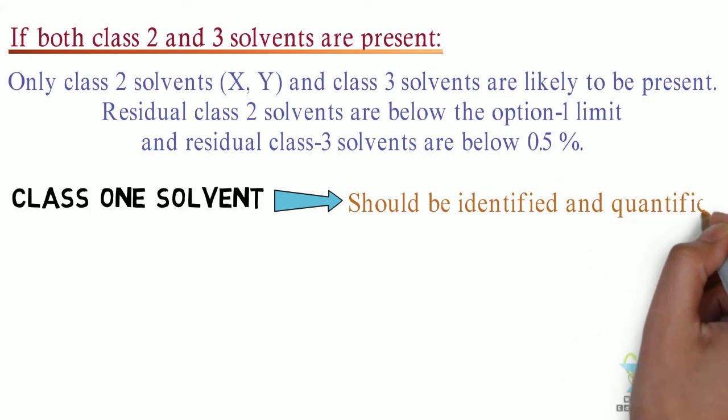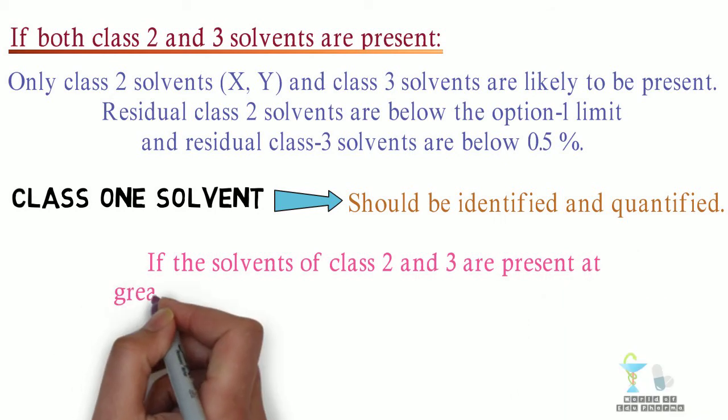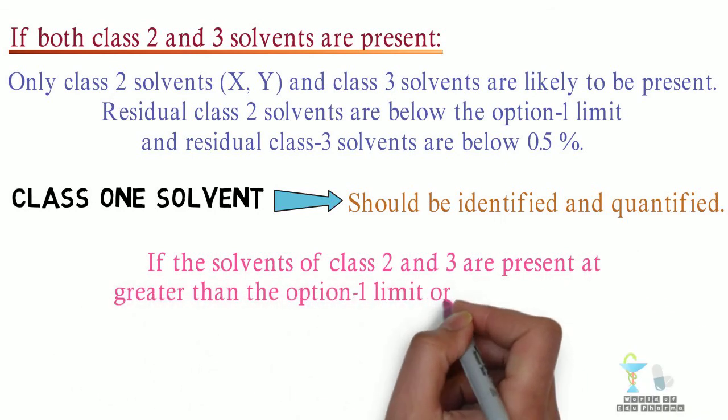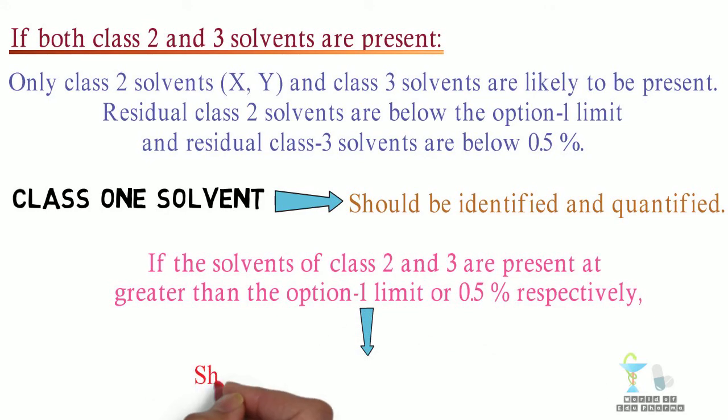If the solvents of class 2 and 3 are present at levels greater than the option 1 limit or 0.5% respectively, they should be identified and quantified.